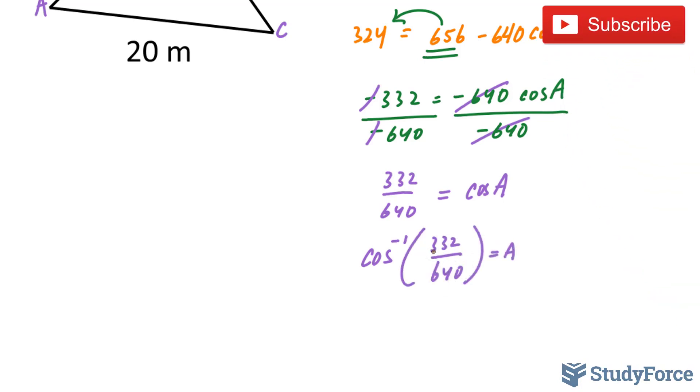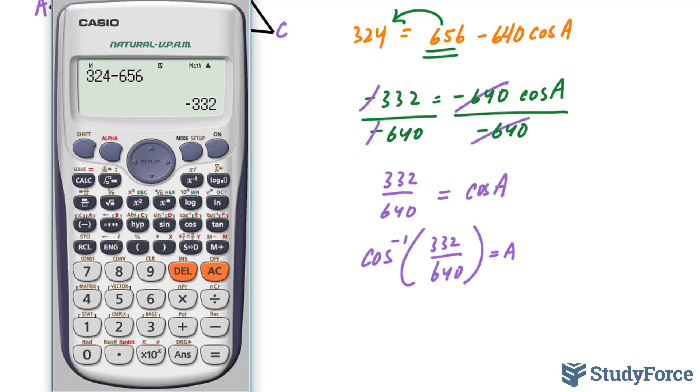Because what some students tend to do is they will evaluate this and they will round the number to two decimal places. And when they use inverse cosine, they end up with an angle that's totally off. So by keeping it as a fraction, you're staying very consistent with your answer.